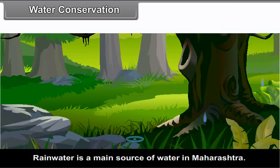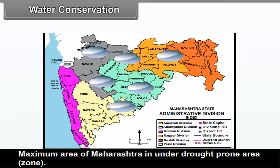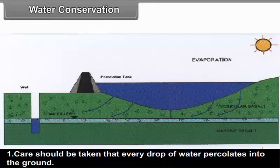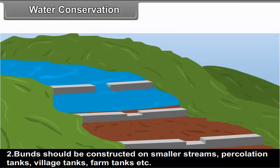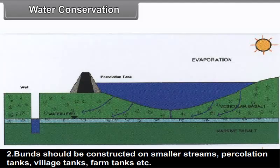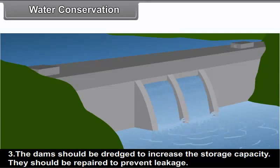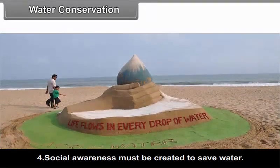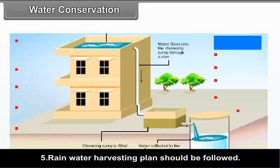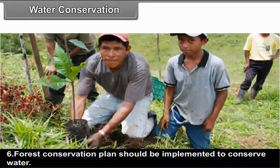Water Conservation: Rain water is the main source of water in Maharashtra. Since maximum area of Maharashtra is under drought prone area, it is necessary to conserve water. Water can be saved by the following methods: 1. Care should be taken that every drop of water percolates into the ground. 2. Bunds should be constructed on smaller streams, percolation tanks, village tanks, farm tanks, etc. 3. Dams should be dredged to increase storage capacity and repaired to prevent leakage. 4. Social awareness must be created to save water. 5. Rain water harvesting plan should be followed. 6. Forest conservation plan should be implemented to conserve water.